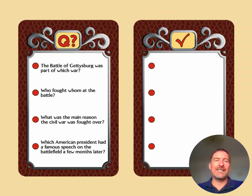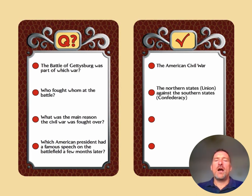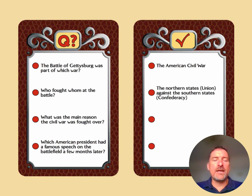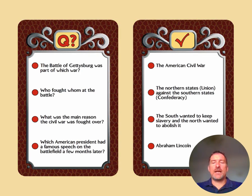Here are four questions about the Battle of Gettysburg. The Battle of Gettysburg was part of which war? The American Civil War. Who fought whom at the battle? The Northern States — the Union Army — against the Southern States, the Confederacy. What was the main reason the Civil War was fought over? The South wanted to keep slavery and the North wanted to abolish it. Which American president had a famous speech on the battlefield a few months later? That was Abraham Lincoln.